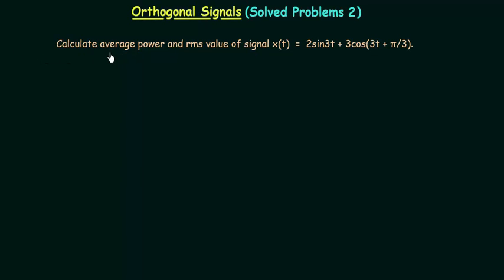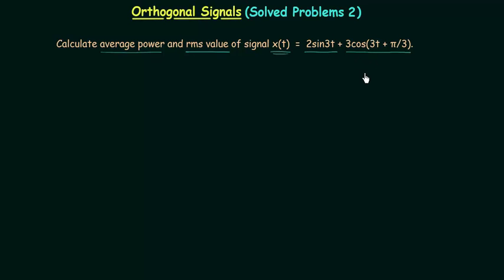In this lecture we will calculate the average power and RMS value of signal xt. Signal xt is equal to 2sin(3t) plus 3cos(3t + π/3). If you remember the orthogonal signals lecture, we discussed 4 properties. According to property number 2, if we have sine and cosine functions with the same frequencies and same phase differences, the two signals are orthogonal. But in this case, frequencies are the same but phase differences are not the same.